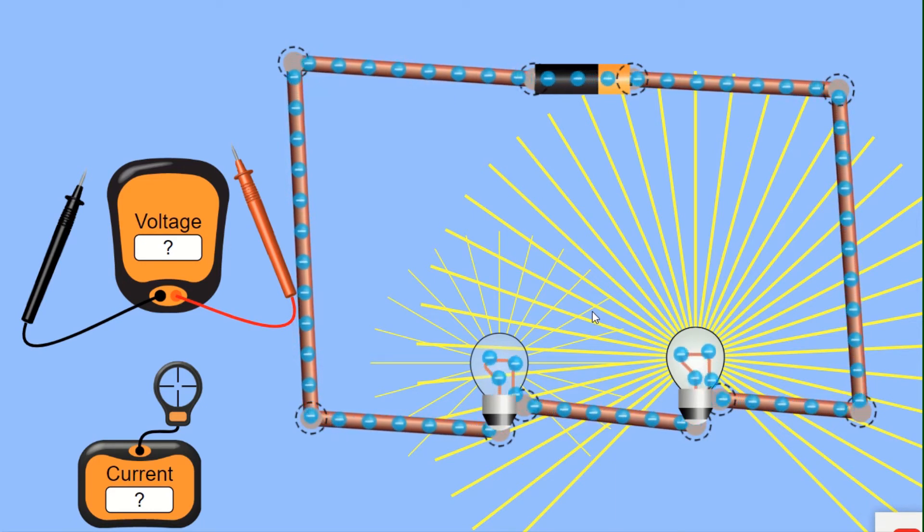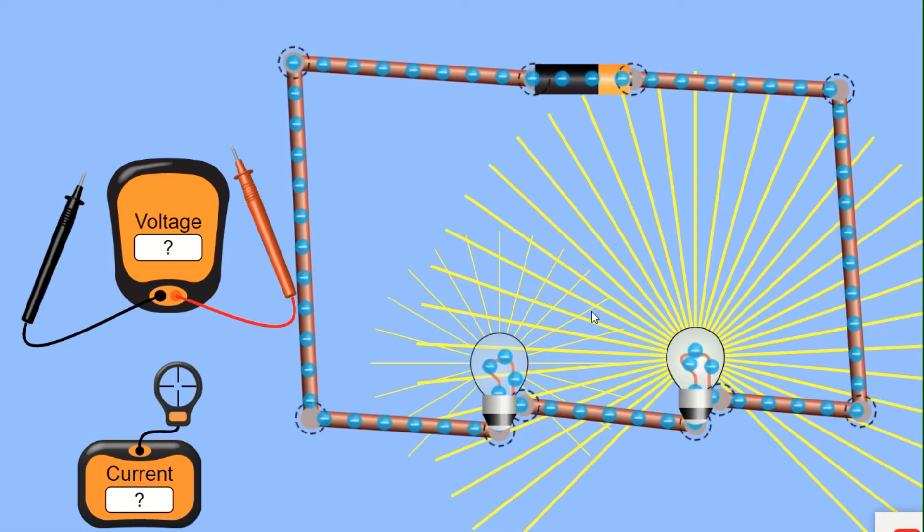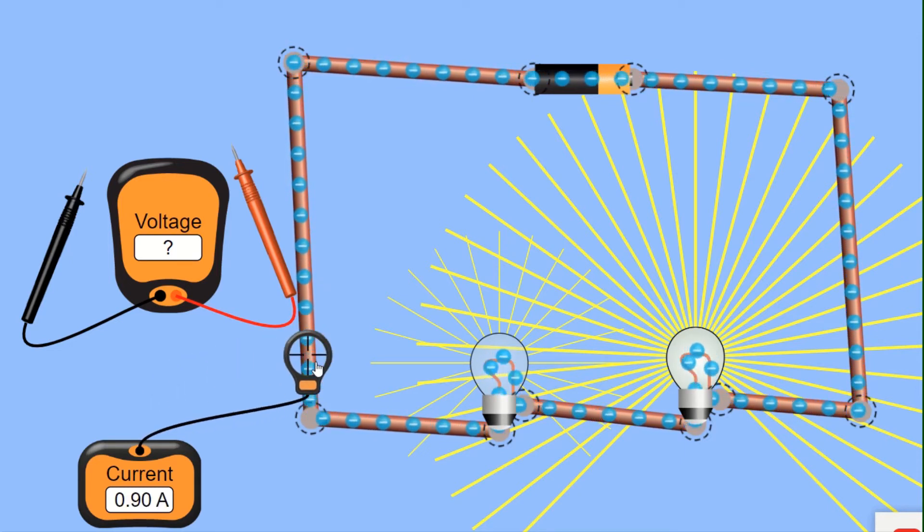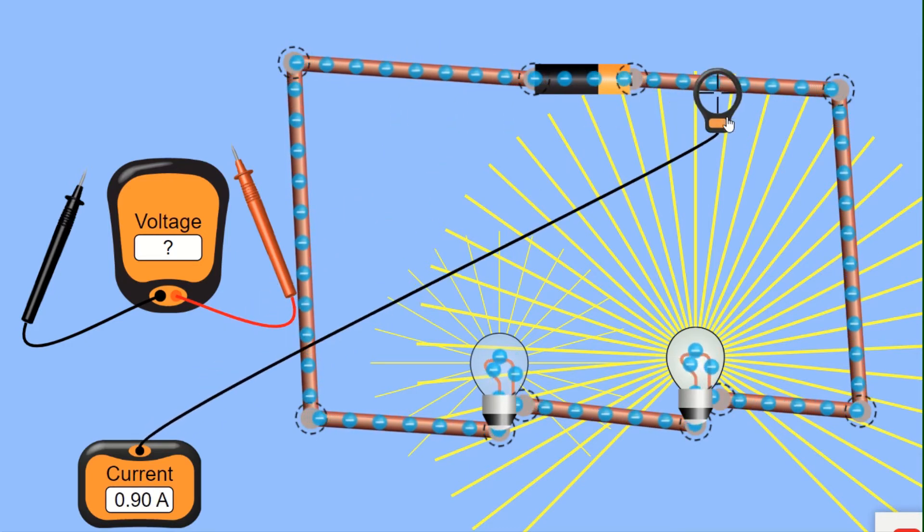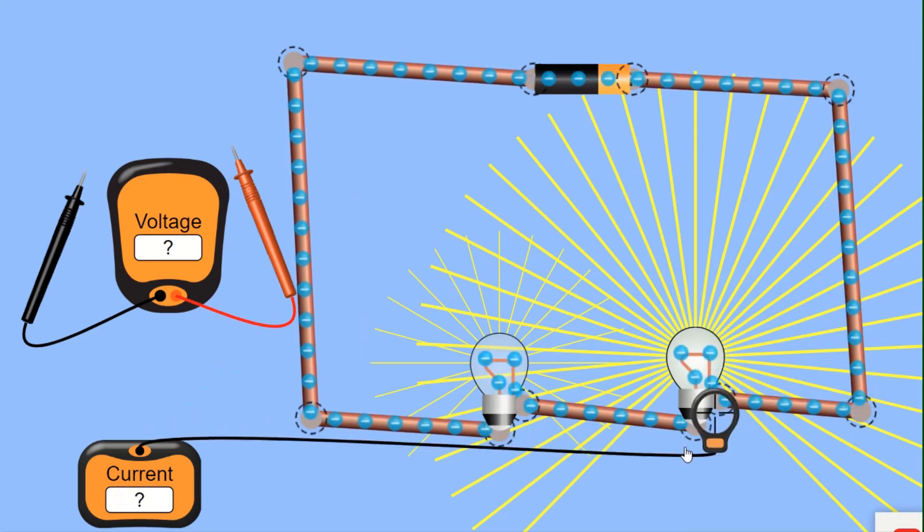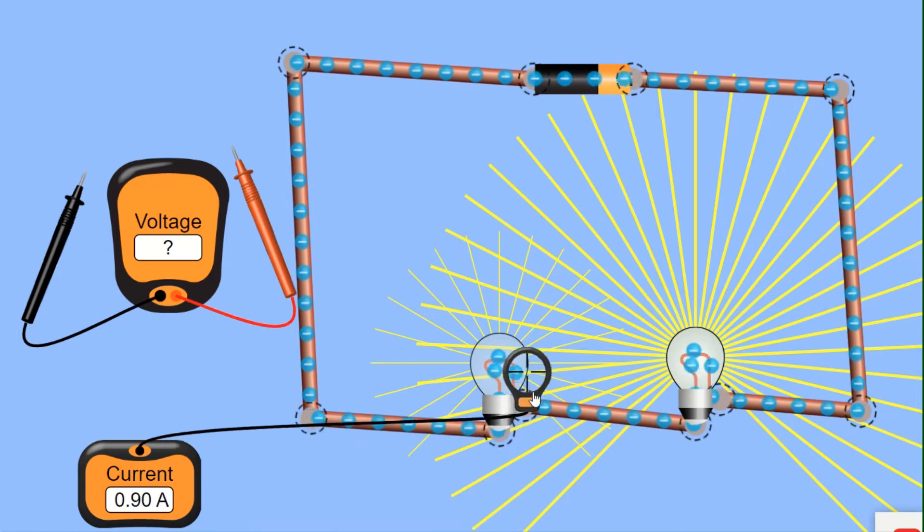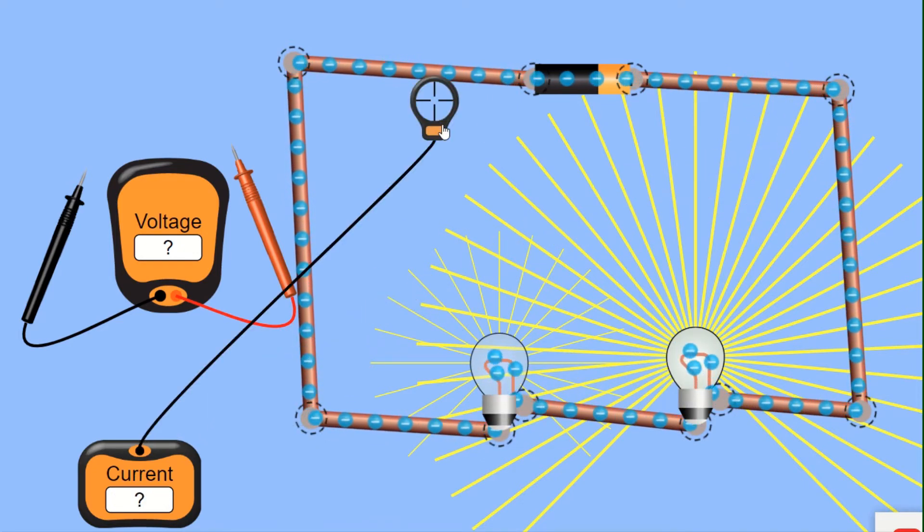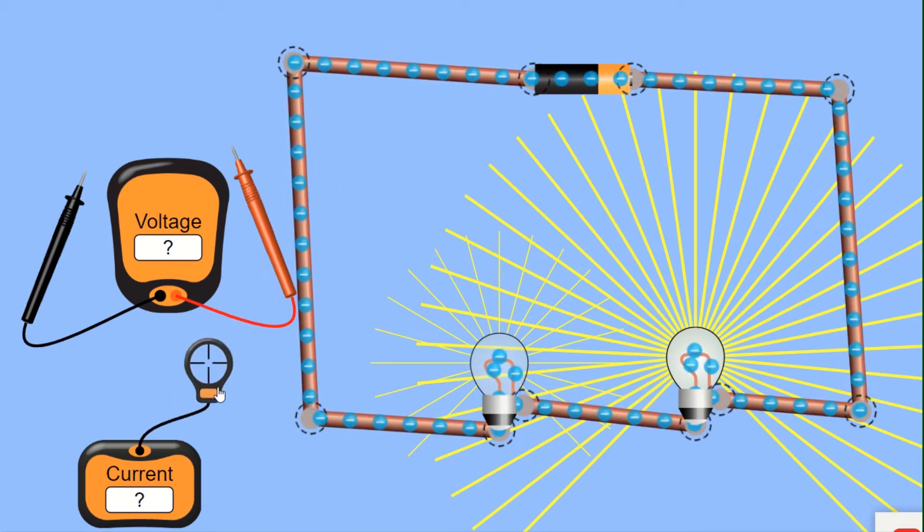And all the circuit is doing is moving it around. It's not making electricity. It moves electricity. And if we take the ammeter, you can see we've got a certain amount of current, 0.9 amps. And it doesn't matter where I measure the current. I always get 0.9 amps because the current is constant at all points in the circuit. And that's hopefully something that you met at GCSE.